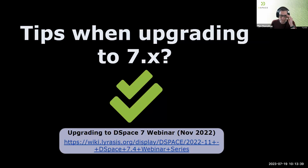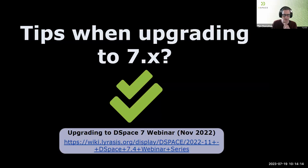Before we open things up to questions, I want to quickly go through some upgrade tips. These are based on the DSpace 7 upgrade webinar from last November, which I'd still recommend watching. Your back-end data will automatically upgrade via our database migration scripts. If you're upgrading from older than DSpace 6, consider starting with a fresh configuration — there's a new local.cfg file added in DSpace 6 that makes configs much easier to manage.